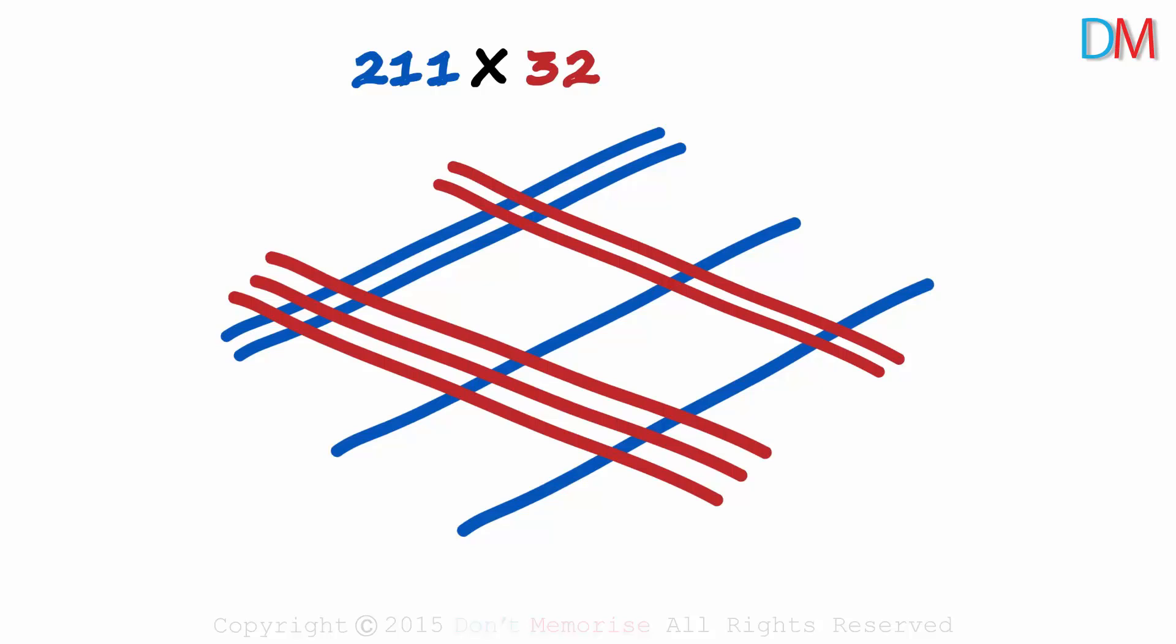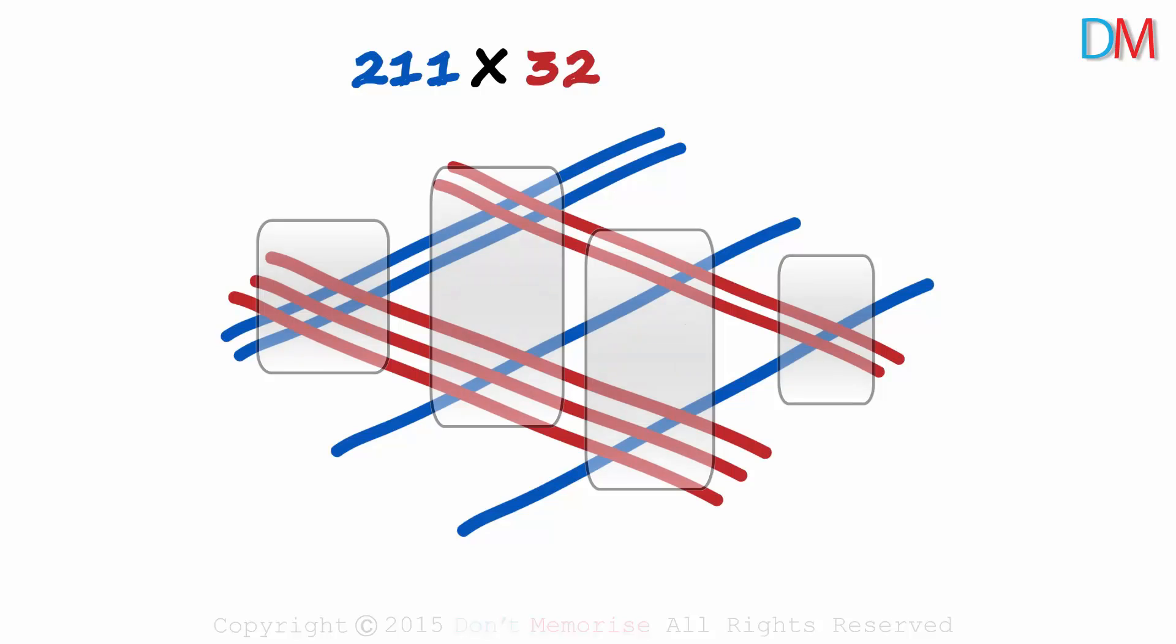How many vertical zones do you see? There's one, two, three and four. Four vertical zones this time.